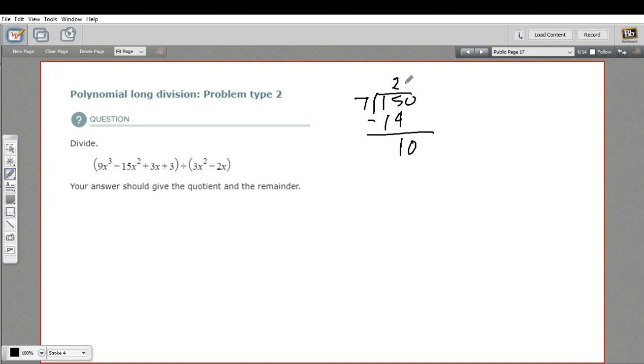How many 7s go into 10? Well that's 1. So 7 times 1 is 7, multiply, and then subtract again, and we get 3. And from here we can't do anything else. So we've got 21 with a remainder of 3.